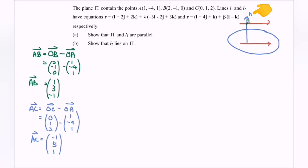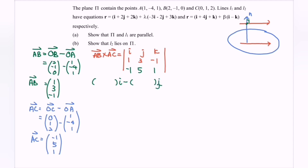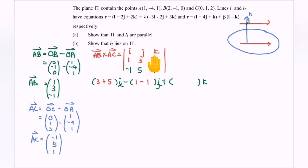In order to find the normal, we compute vector AB cross vector AC. Substituting AB = (1, 3, -1) and AC = (-1, 5, 1), we expand using I, J, K components. Closing up the I component: 3(1) minus (-1)(5) gives 3 + 5 = 8. For J: we get -(1·1 - (-1)·(-1)) = 0. For K: 1·5 - 3·(-1) = 8.